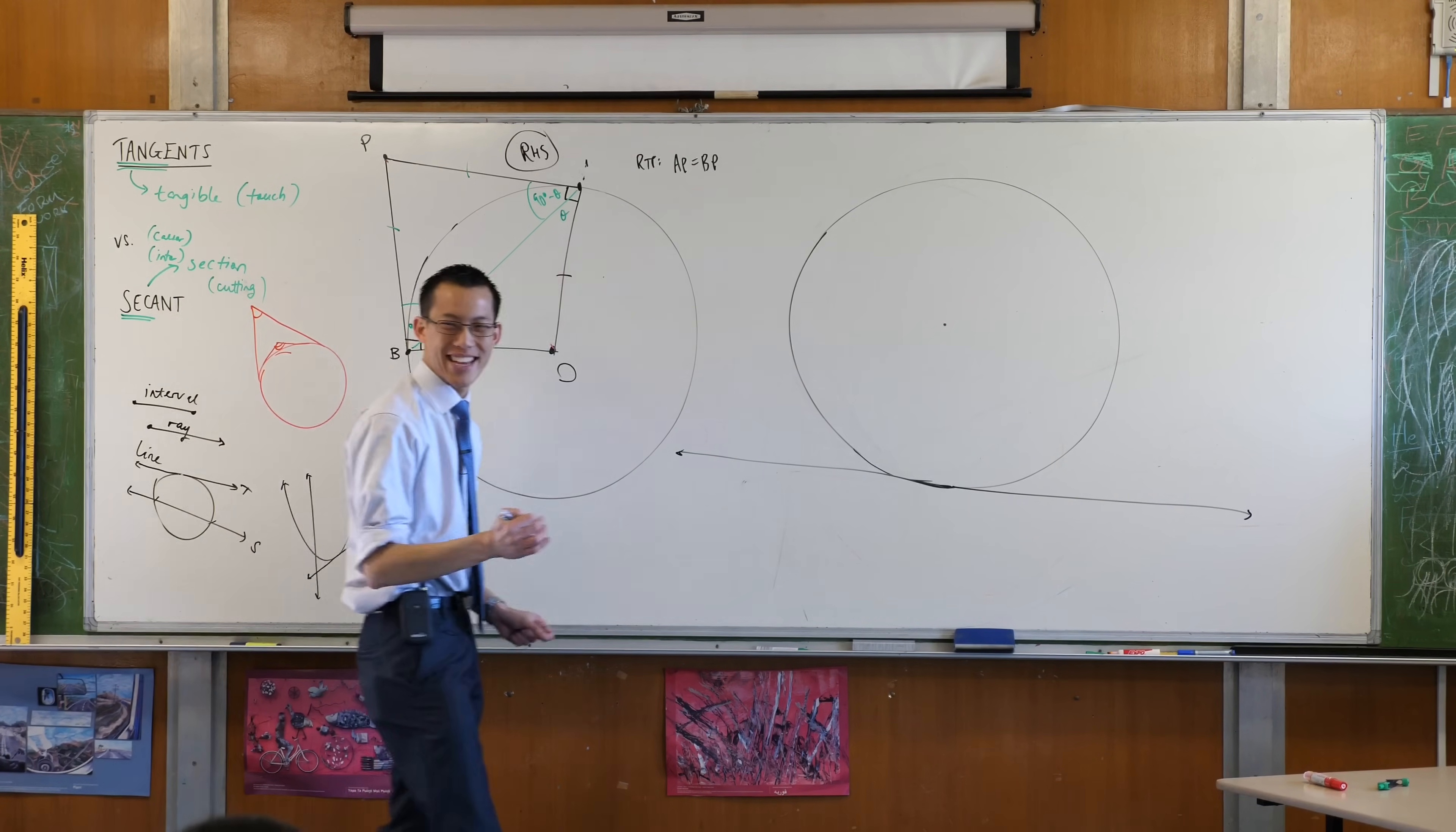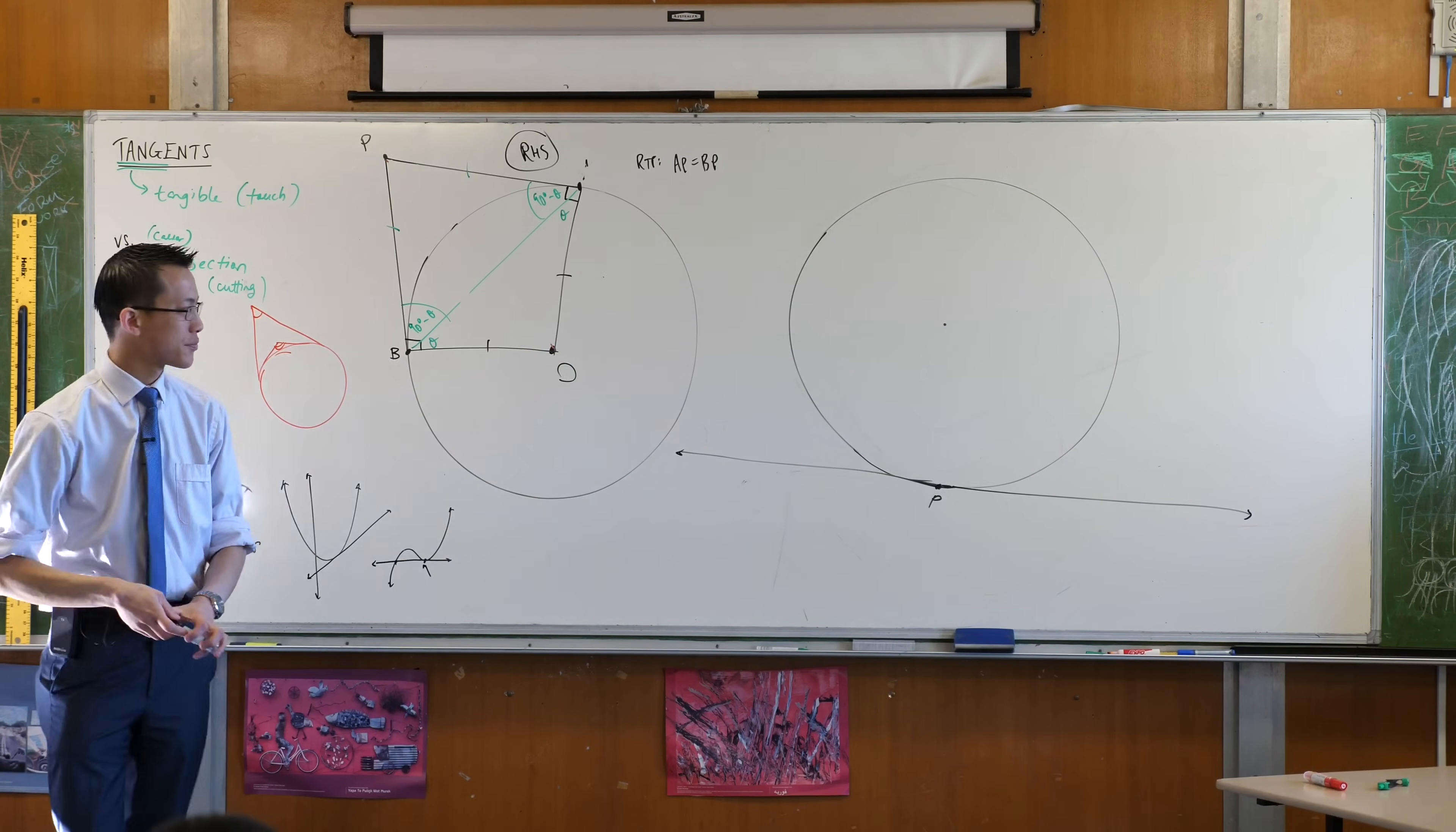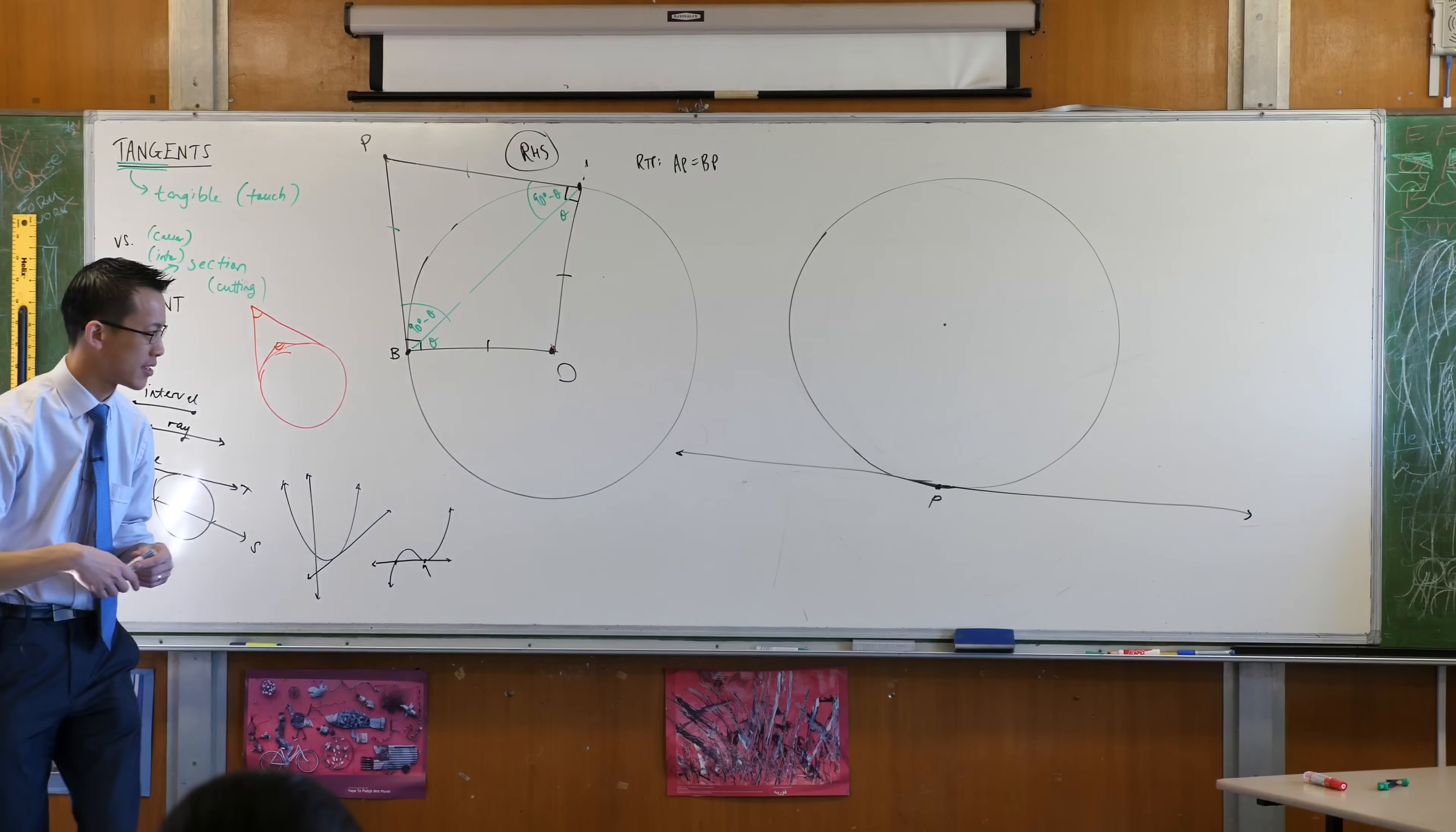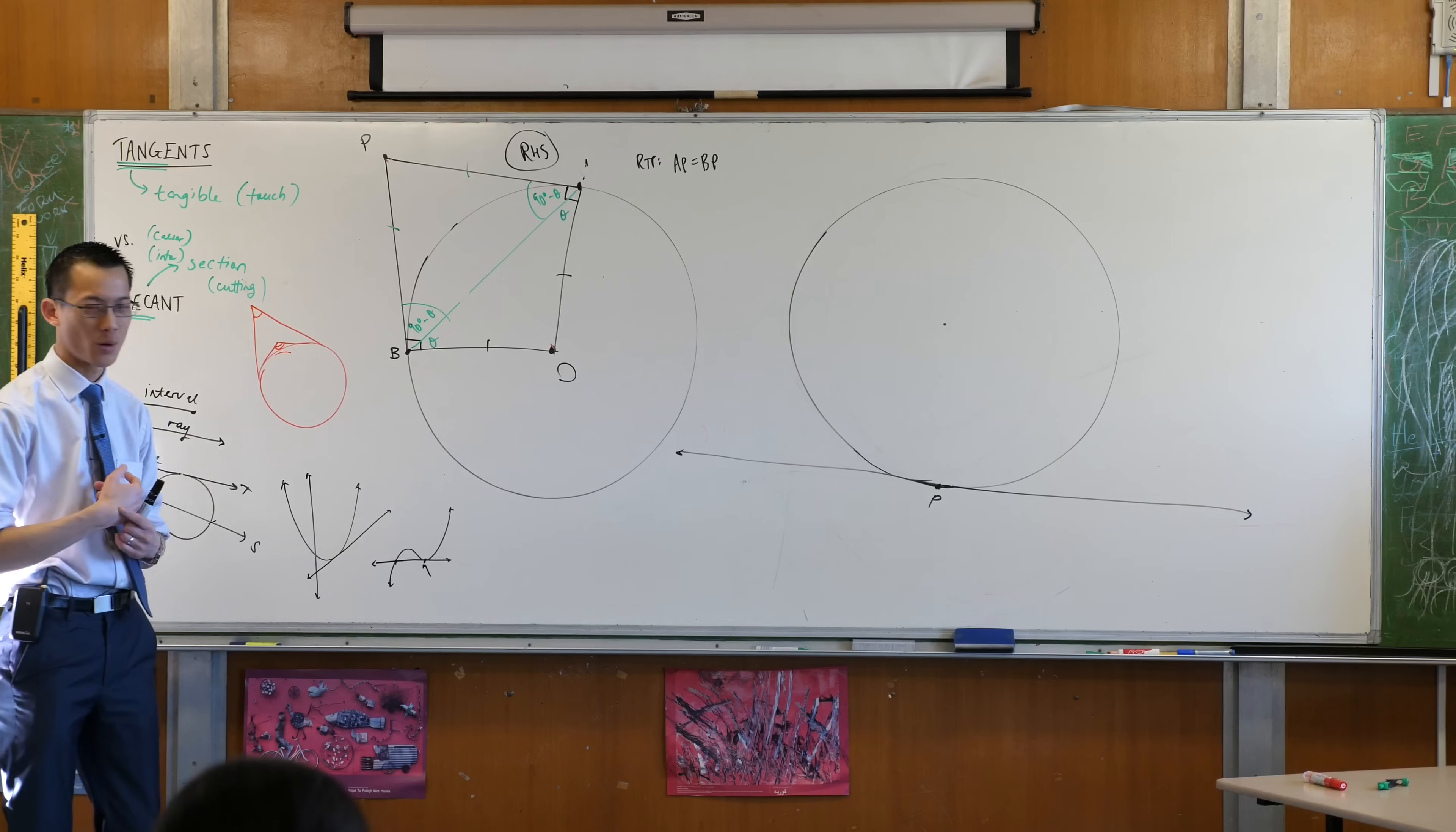Now we'll call this point of contact down here, let's call it P. There's the point of contact. Now I want you to draw from the point of contact a chord in the circle. We haven't talked about chords since the first lesson on circles. Do you remember what a chord is? A chord is any interval that what? What makes a chord a chord?